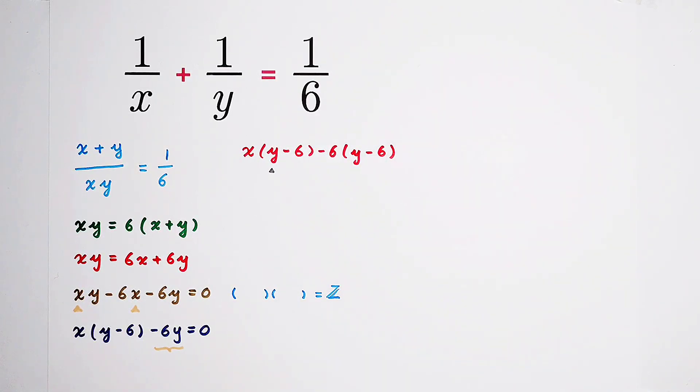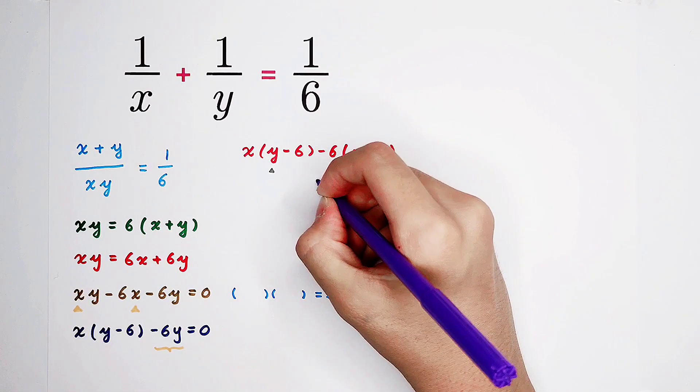And I'm gonna write it as y minus 6. Of course, it's not possible, but I can do that. However, this 0 will be broken. We know that here is negative 6y.